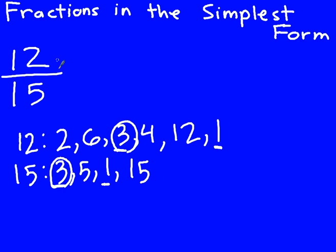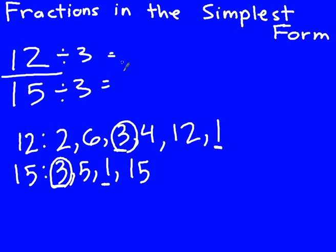It's a factor of 12 and it's a factor of 15, and it's the largest number in common between both of them. So I'm going to take my 12 and divide it by 3, and take my 15 and divide it by 3. I divide my numerator by the greatest common factor, and I divide my denominator by the greatest common factor. 12 divided by 3 is 4, and 15 divided by 3 is 5. That gives us 4 fifths.